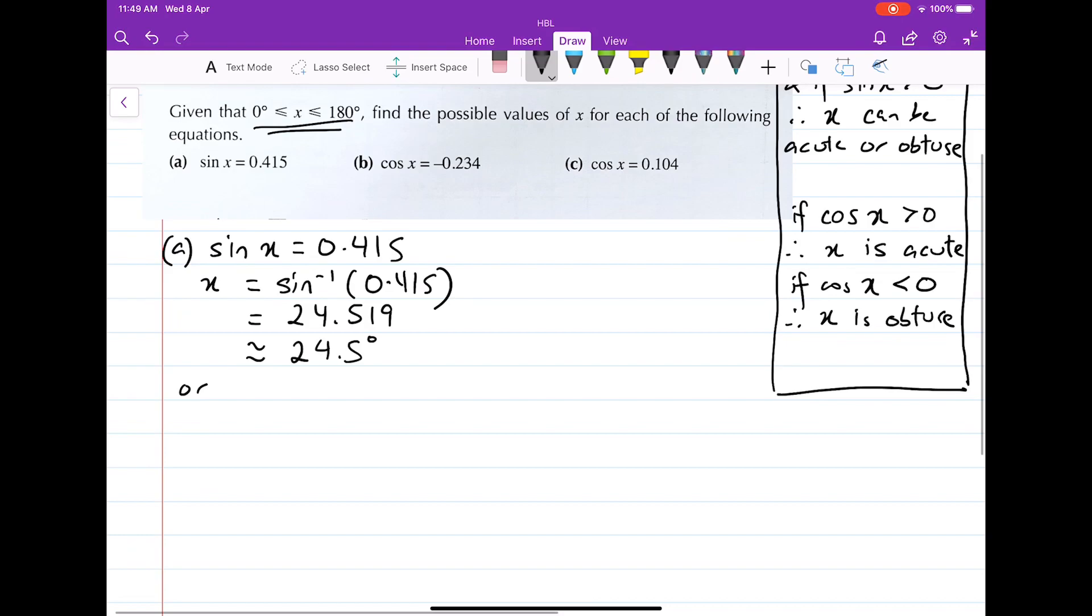Or, x can be equals to 180 degrees minus this angle that we've gotten, which is 24.519. And that is approximately equals to 155.481, which is approximately equals to 155.5 degrees.